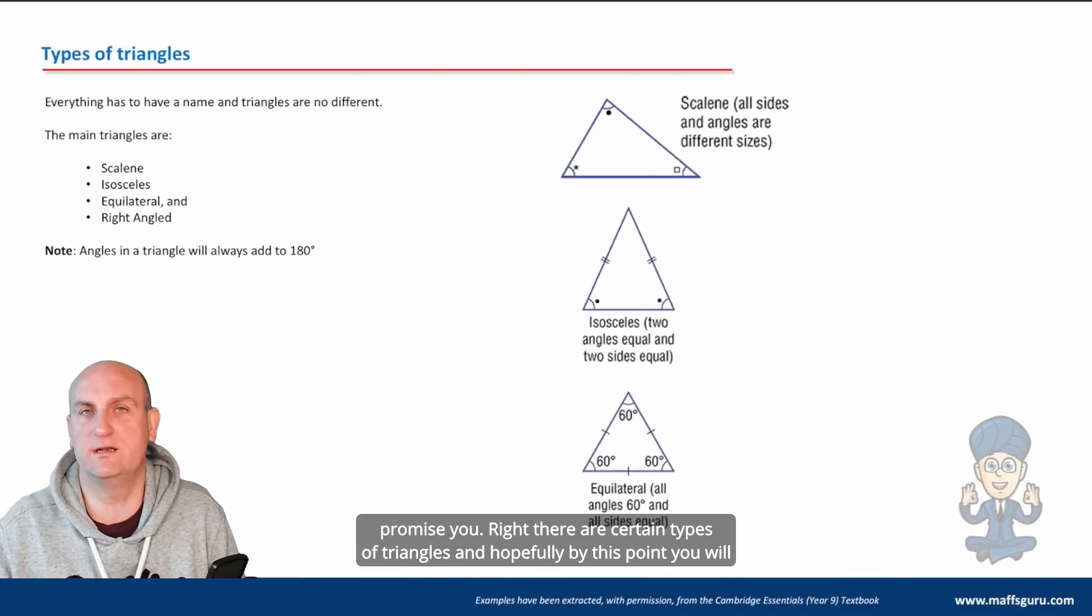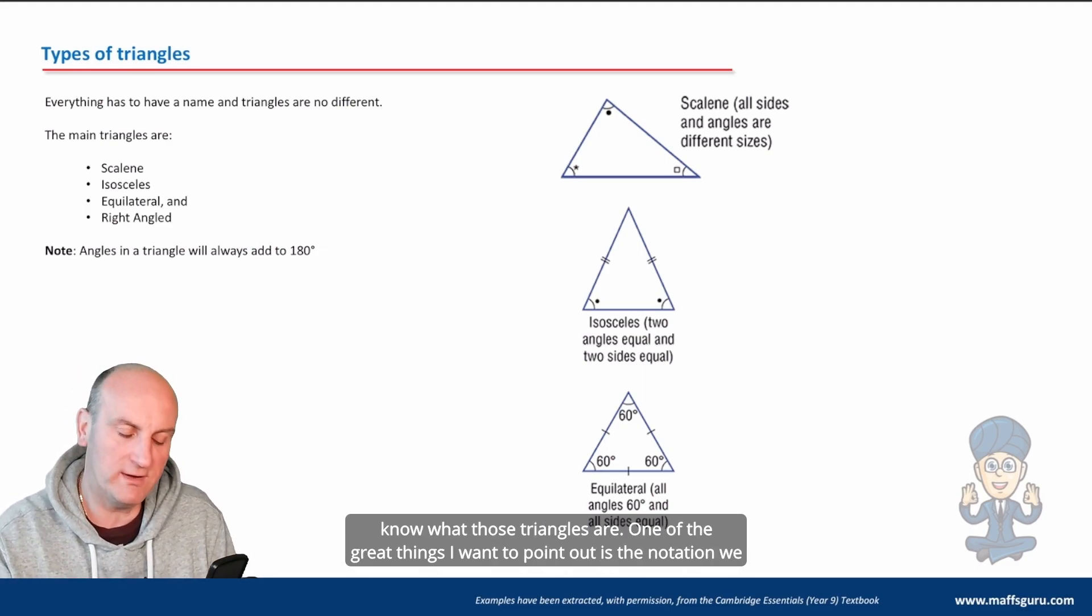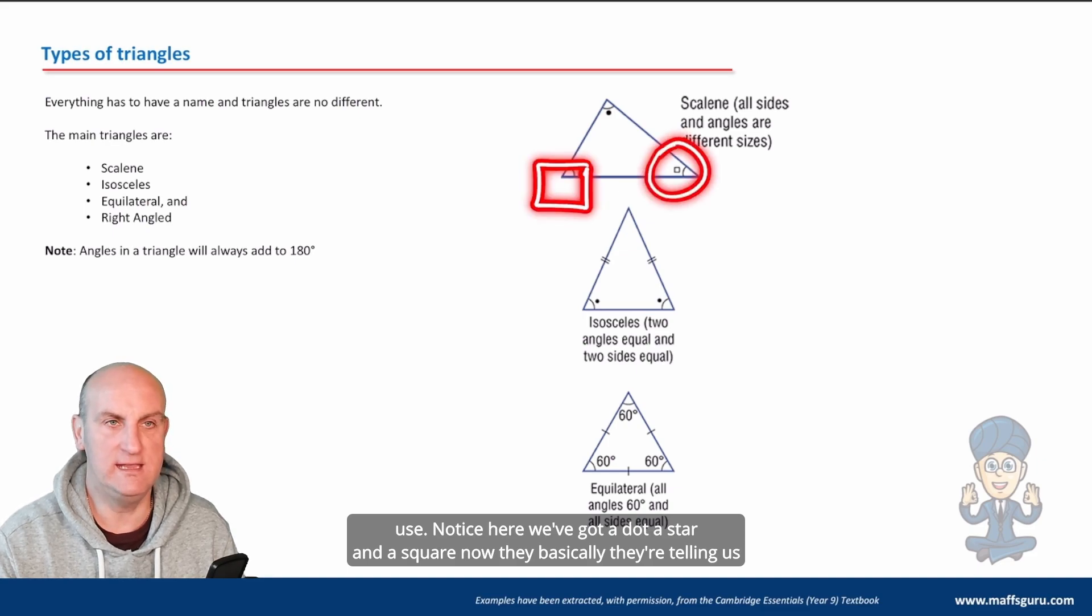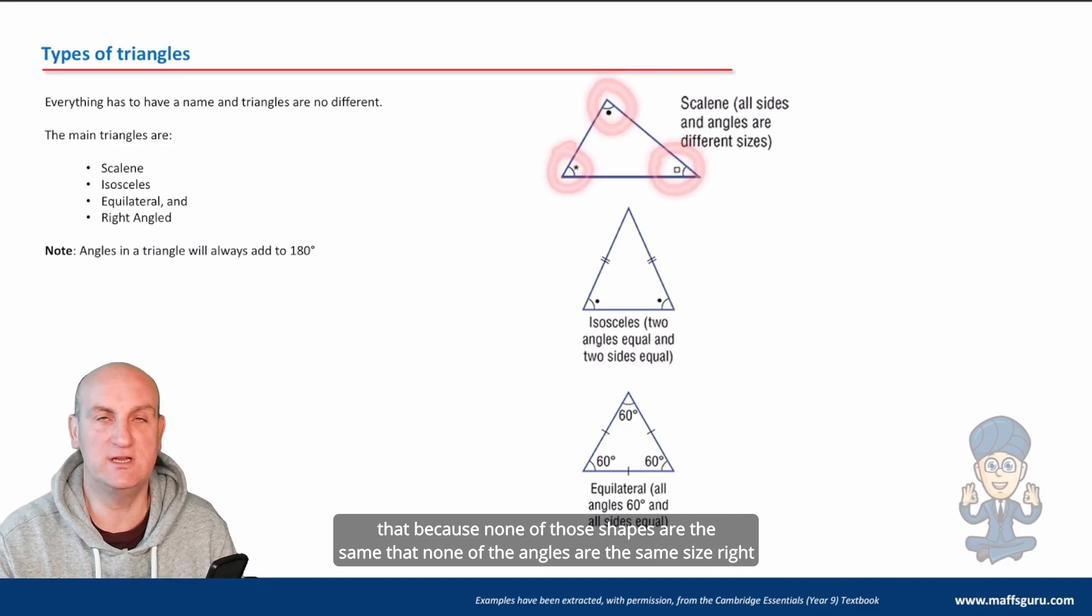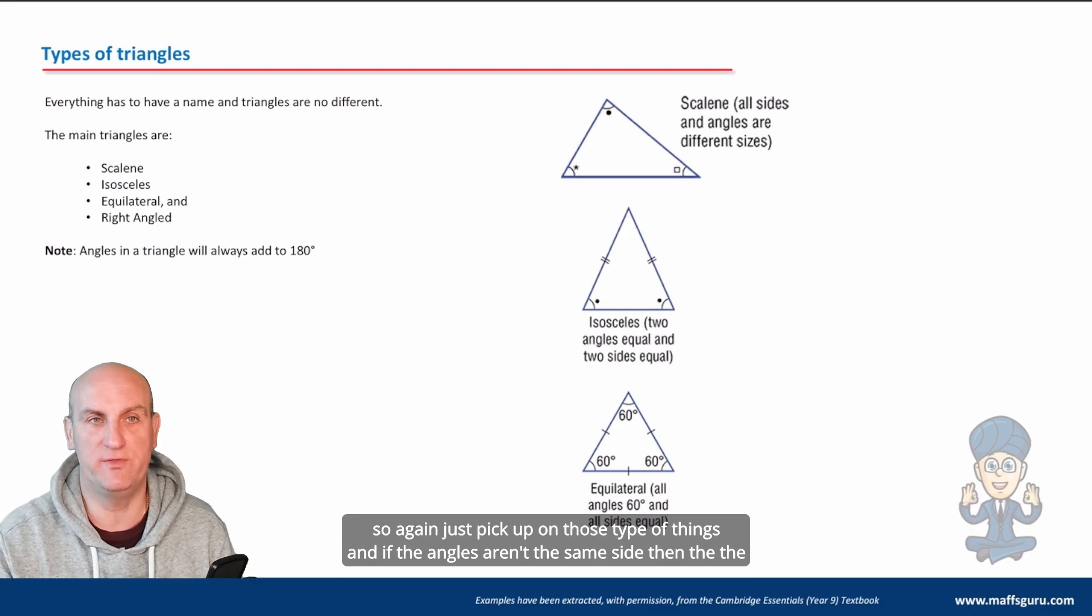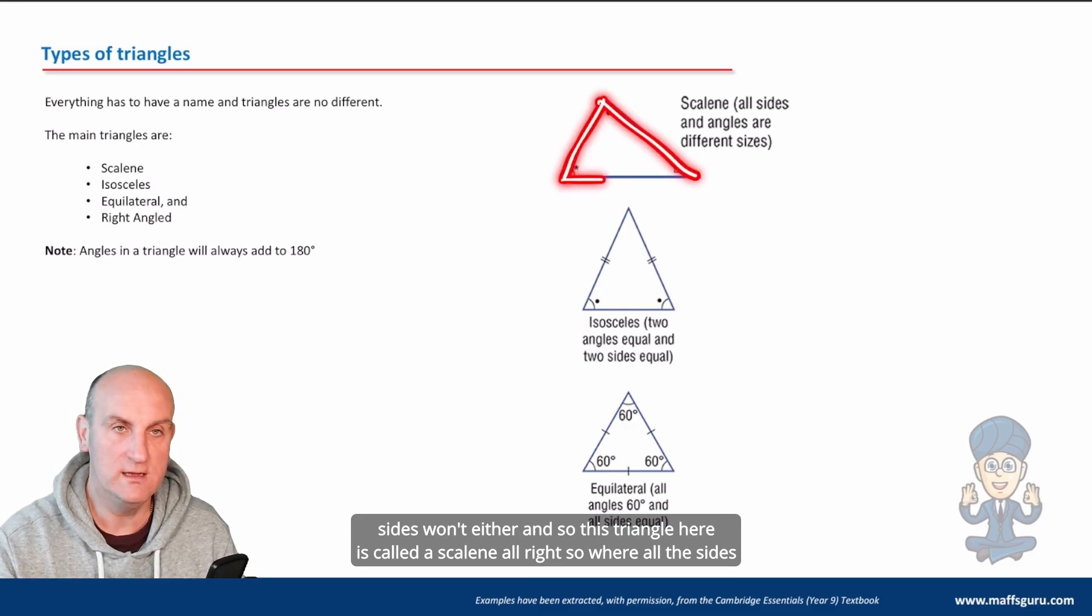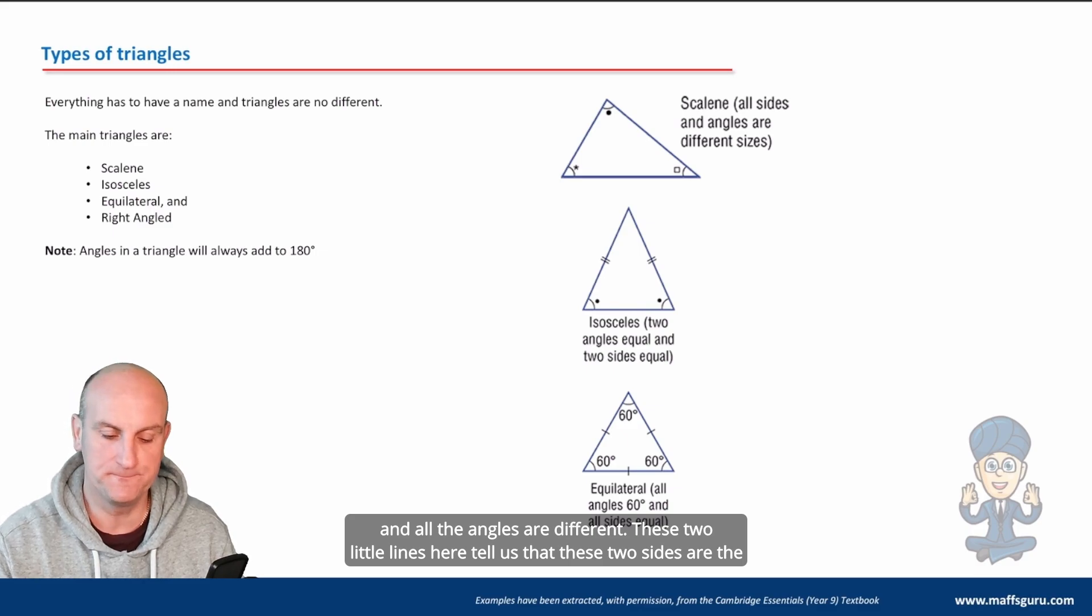There are certain types of triangles and hopefully by this point you will know what those triangles are. One of the great things I want to point out is the notation we use. Notice here we've got a dot, a star, and a square. They basically are telling us that none of those shapes are the same, that none of the angles are the same size. Just pick up on those type of things. If the angles aren't the same size then the sides won't be either, and so this triangle here is called a scalene.